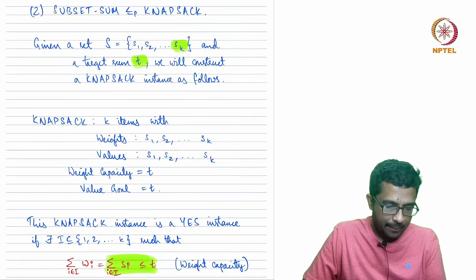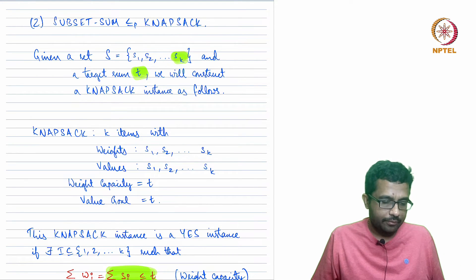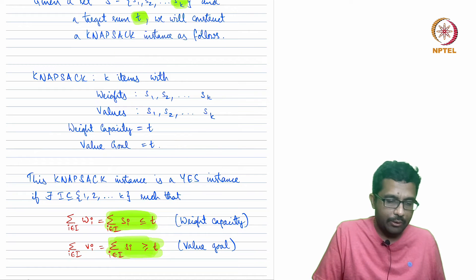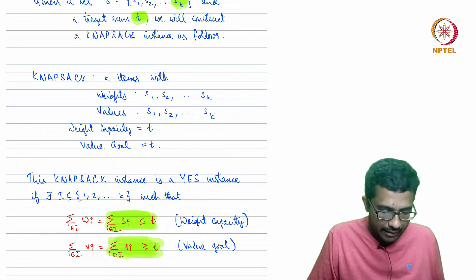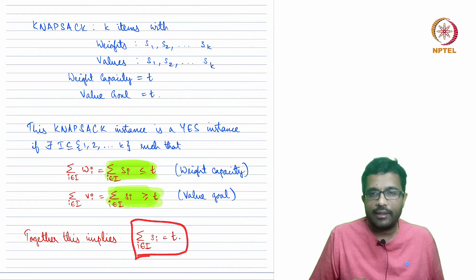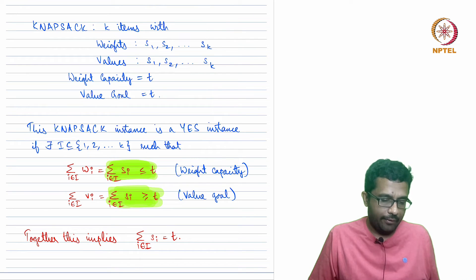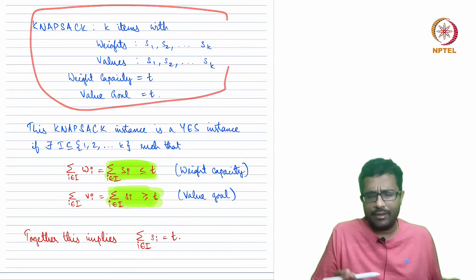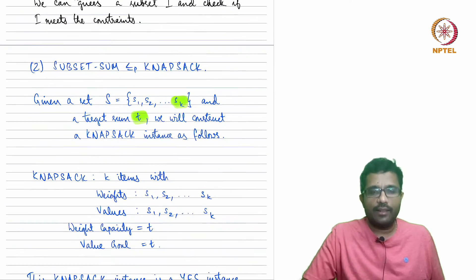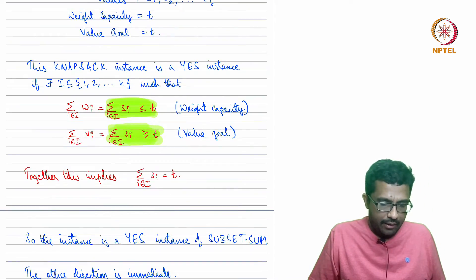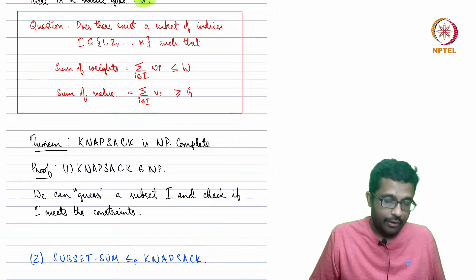To summarize: the Knapsack problem involves weights, values, and a capacity. We reduce Subset Sum to it by making the weights and values equal to the numbers in the Subset Sum instance, and setting both the weight capacity and value goal equal to the target sum. A yes-instance of Knapsack yields a subset summing to the target, and vice versa. This shows Subset Sum reduces to Knapsack in polynomial time, proving Knapsack is NP-complete.